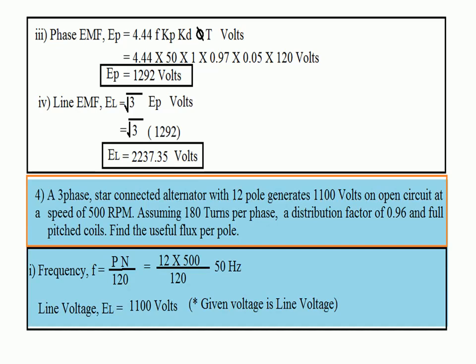Next type of problem: A 3-phase star-connected alternator with 12 poles generates 1100 volts on open circuit at a speed of 500 RPM. Assuming 180 turns per phase, distribution factor 0.96, and full-pitched coils, find the useful flux per pole. This is also asked in the V2 question paper for 8 marks. You have to use the EMF equation and calculate flux φ.